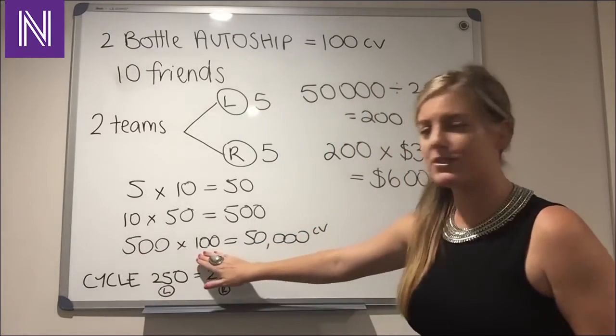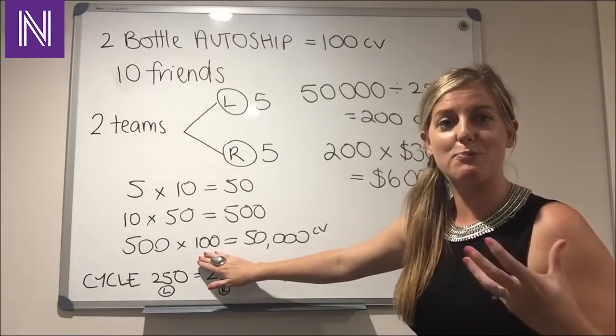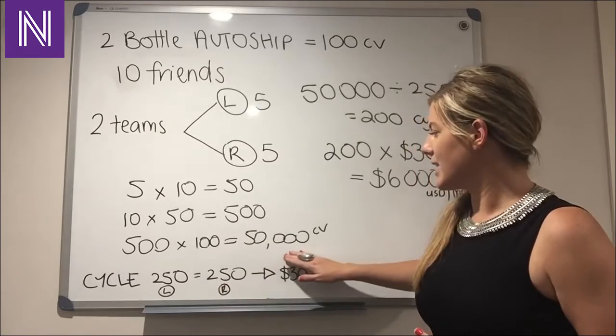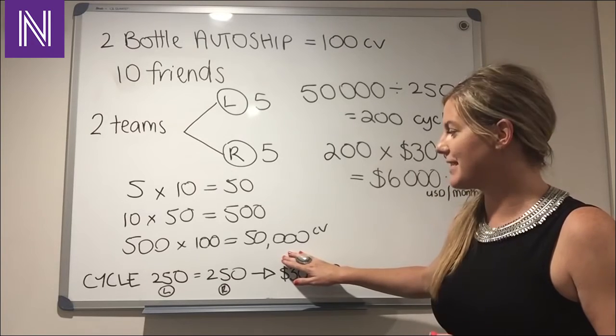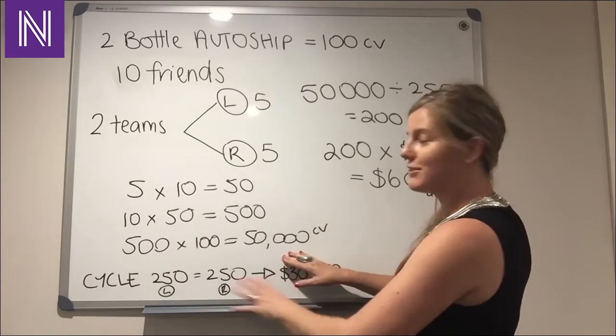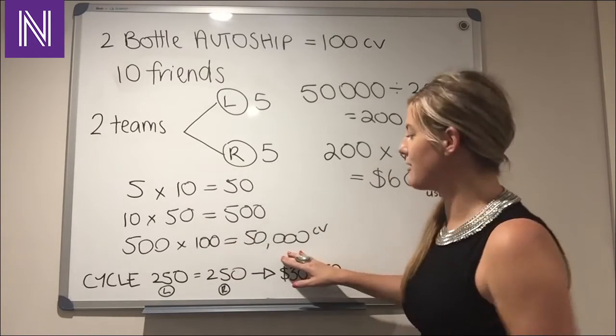Now 500 people just using enough product for themselves, that 100 points per month gives us 50,000 CV points that we've got going through our business center each month. Now obviously this is just our left team. We need to get this on our right team as well.